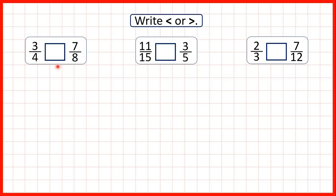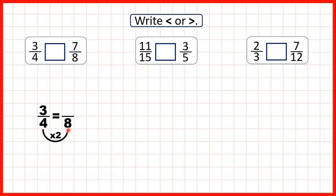First we have three quarters and seven eighths. Now eight is in the four times table, so we can find a fraction equivalent to three quarters which has a denominator of eight. Remember we use multiplication or division to find equivalent fractions, and four times two is eight.